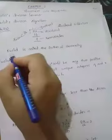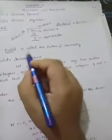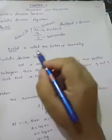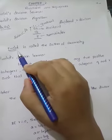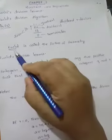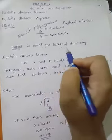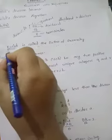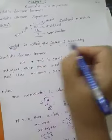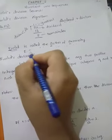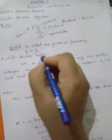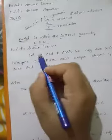Euclid is called the father of geometry. You can remember it like this: E, F, G — Euclid is called the Father of Geometry. We will now see the Euclid Division Lemma.